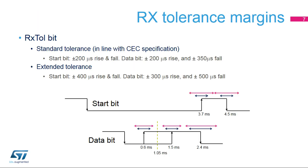The HDMI CEC controller supports two RX tolerance margin modes. First, a standard tolerance mode in line with CEC specifications: plus or minus 200 microseconds on start bit rise and fall time, plus or minus 200 microseconds on the rising edge of a data bit, and plus or minus 350 microseconds on the falling edge. The second is an extended tolerance mode, where the start bit timing is extended to plus or minus 400 microseconds for rise and fall transition, plus or minus 300 microseconds on the rising edge of a data bit, and plus or minus 500 microseconds on the falling edge.